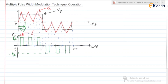In single pulse width modulation, corresponding to each half cycle, the SCRs were turned on and turned off only a single time. But in order to get this output voltage, at this instant we need to turn on S1 and S2, then turn off S1 and S2. Again at the next point, S1 is turned on, S1 is turned off, and again S1 is turned on, S1 is turned off. So we need to turn on and turn off the switches multiple times.